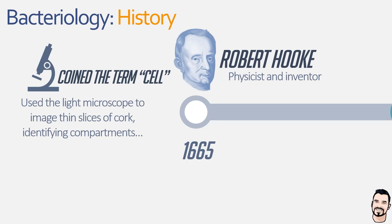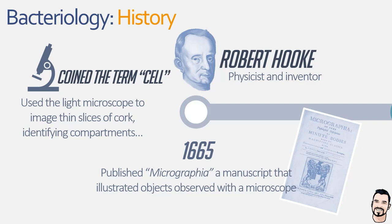Hooke then went on to make observations of various biological specimens, and in 1665 he published Micrographia, a manuscript that detailed the structure of mould, which he observed as a form of plant life, noting its intricate filaments and spores. Overall, he laid the foundations for the field of microbiology, opening up the microscopic world.